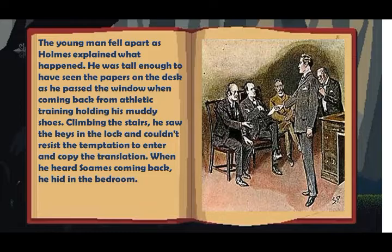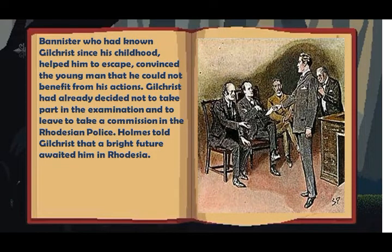Gilchrist was tall enough to have seen the papers on the desk as he passed the window, when coming back from athletic training holding his muddy shoes. Climbing the stairs, he saw the keys in the lock and couldn't resist the temptation to enter and copy the translation. When he heard Soames coming back, he hid in the bedroom. Bannister, who had known Gilchrist since his childhood, helped him to escape and convinced the young man that he could not benefit from his actions.